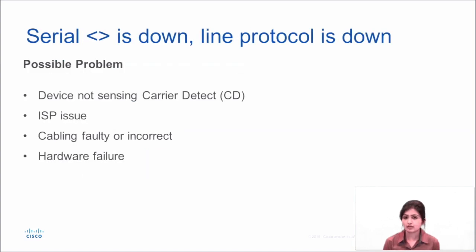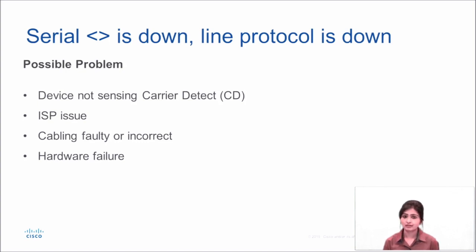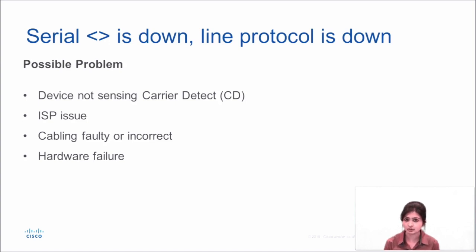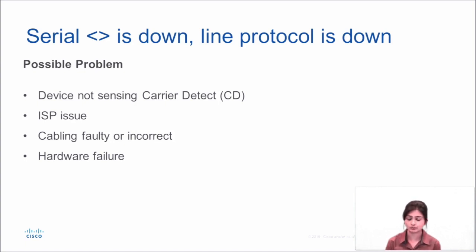If you issue the command 'show interface serial' and you see your serial interface is down and line protocol is down, the possible problem could be your device is not sensing carrier detect, maybe there's an ISP issue, maybe the cable is not installed properly, or it could be a hardware issue.